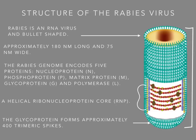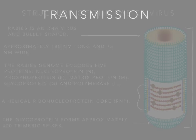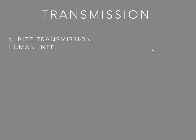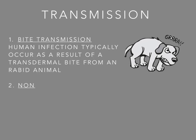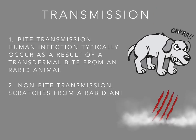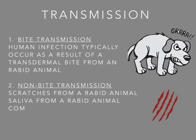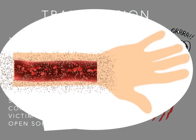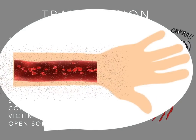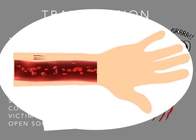Let's discuss the transmission of the rabies virus. First, bite transmission: human infection typically occurs as a result of a transdermal bite from a rabid animal. Second, non-biting transmission: scratches from a rabid animal, or saliva of the rabid animal coming into contact with the victim's mucous membrane or an open sore. If a person's arm was scratched by a rabid animal, that would allow the virus to enter and start to replicate.